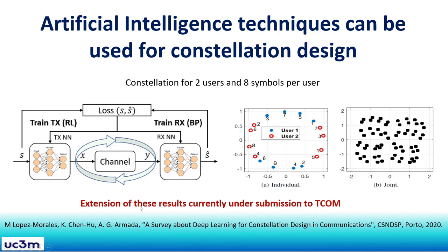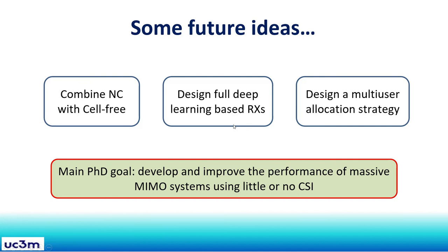Some future ideas include combining non-coherent communications with cell-free architectures, designing fully deep learning-based receivers, and developing a multi-user resource allocation strategy. The main goal of this research is to develop and improve the performance of Massive MIMO systems using little or no channel state information.